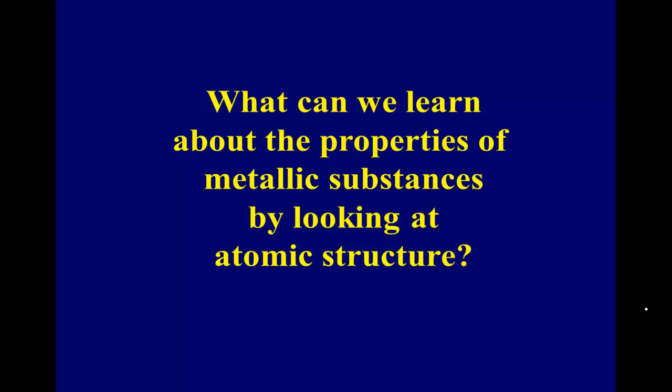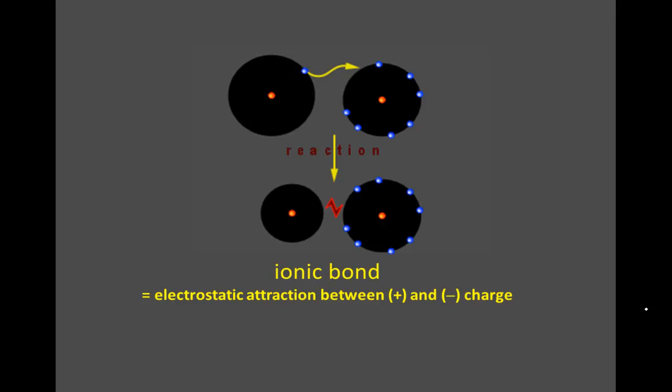So the properties of metals can be understood by looking at the atomic structure of metallic bonding. But first, let's get reacquainted with the ionic bond, because if you understand the ionic bond, that's going to make it a lot easier to understand what the electron sea model is telling us.